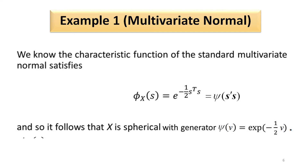Let us look at an example: the multivariate normal distribution. Consider the multivariate normal distribution in the standard form — that is, it has mean vector equal to null and the dispersion matrix is the identity matrix. Then the characteristic function of x will be given by e to the power minus half s-transpose s. So I can write this as chi(s-transpose s). This chi function is a function of s1² + s2² + ... + sn², where s1, s2, ..., sn are the components of the vector s. Then x follows a spherical distribution, and this function chi is called the generator of this distribution. The generator takes the form chi(v) = e^(−v/2).